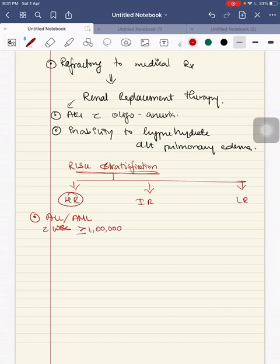For high risk, if they have ALL or AML with WBC count of more than or equal to 1 lakh.